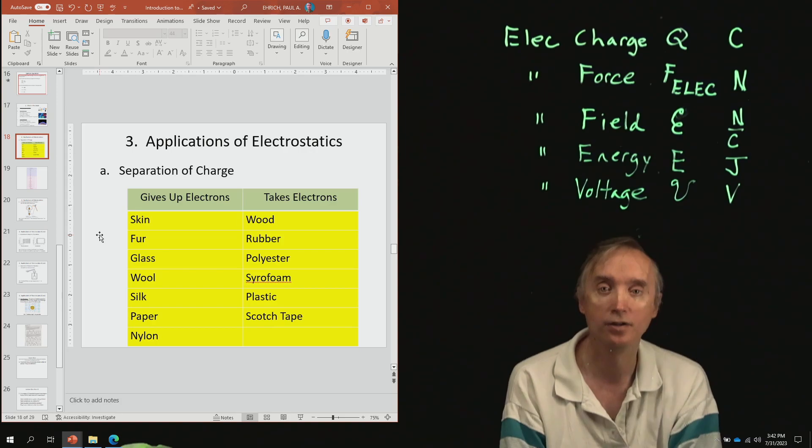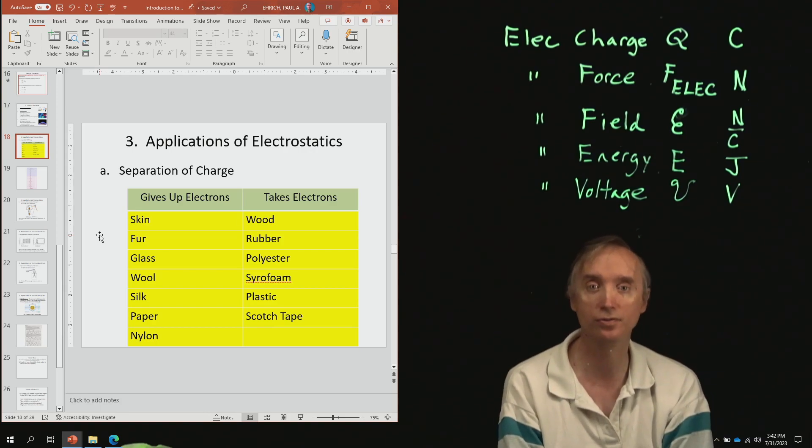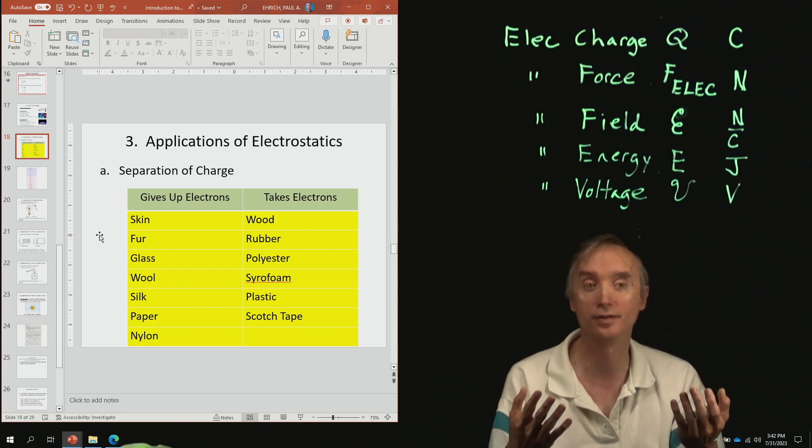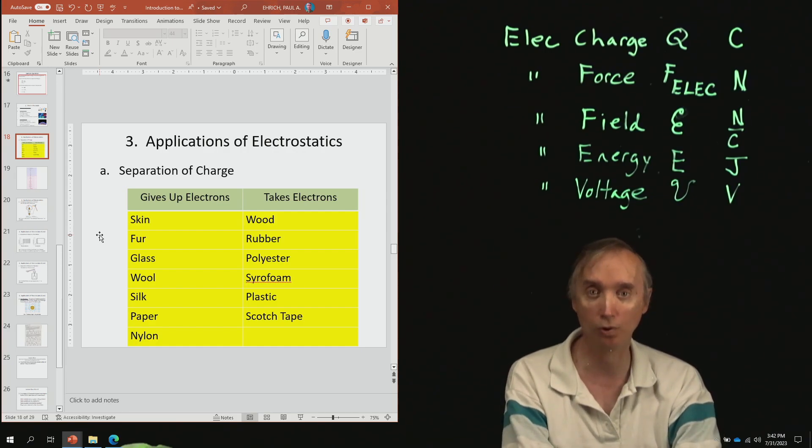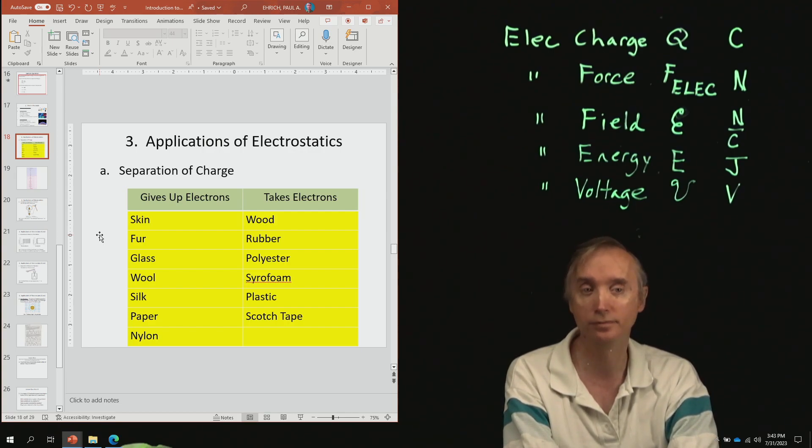For example, your skin likes to give up electrons. Fur, which is a type of skin, also likes to give up electrons. Glass, like a glass rod or a test tube, tends to give up electrons when it's rubbed. Wool tends to give up electrons. Silk, paper, and nylon.